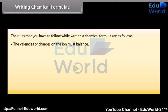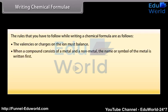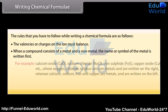The rules that you have to follow while writing a chemical formula are as follows. The valencies or charges on the ion must balance. When a compound consists of a metal and a non-metal, the name or symbol of the metal is written first.